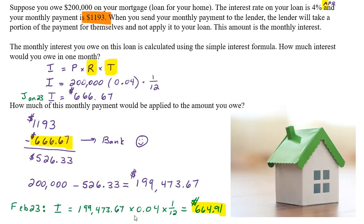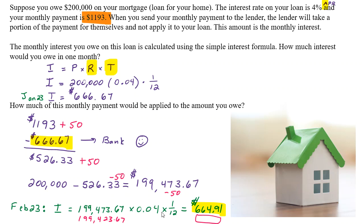I hope you found that application of simple interest interesting. When we know how these money things work, we can make smart decisions about how to best save on extra fees. One way to do that is to send in more than the monthly payment. If you send in an extra $50, they take that extra $50 right off what you owe — it's not subject to interest. So the next month, your principal is a little bit lower, which lowers your interest. If you do that month after month, you could actually save thousands of dollars in interest in the long run.